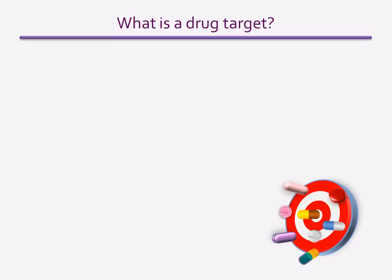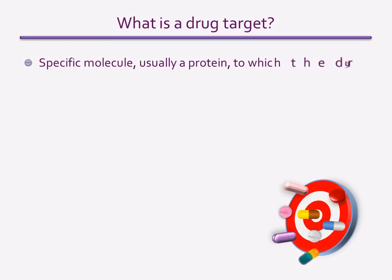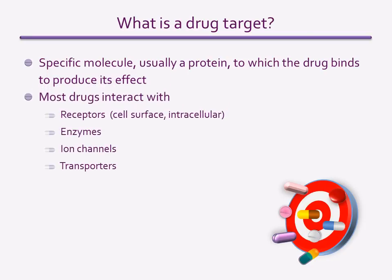So what exactly is a drug target? It is any molecule that a drug binds to to produce its effect. Proteins are the mediators of most cellular activities, so the vast majority of target molecules are proteins. The main proteins that drugs interact with are essential players in cell-signalling cascades: receptors — especially G-protein-coupled receptors — enzymes, ion channels and transporters.